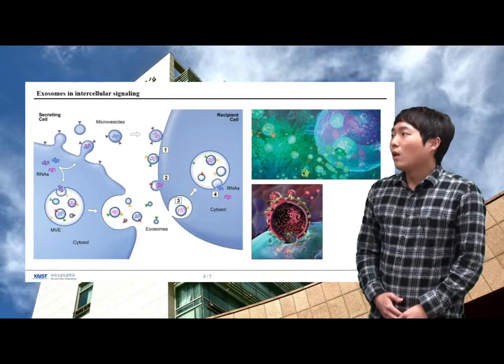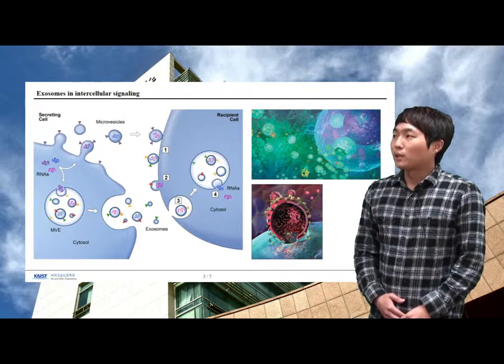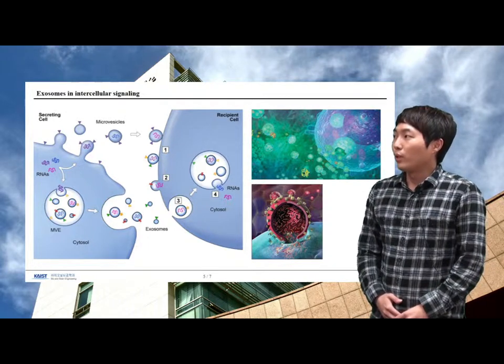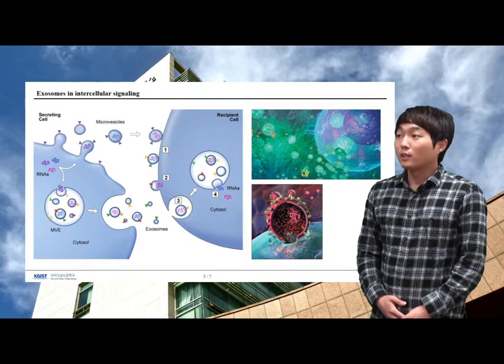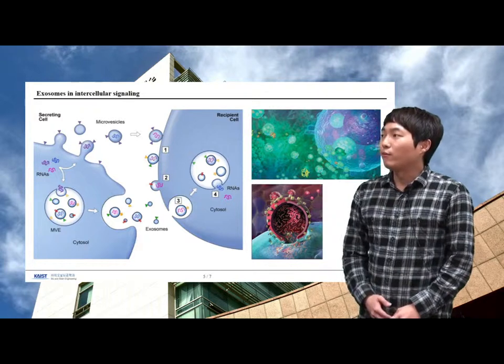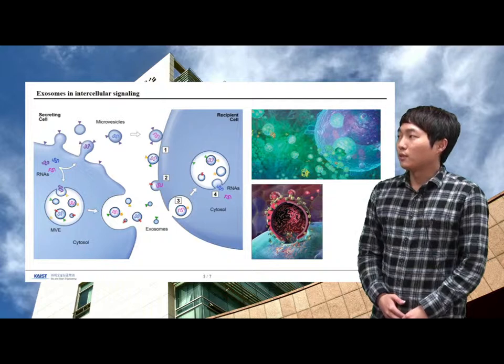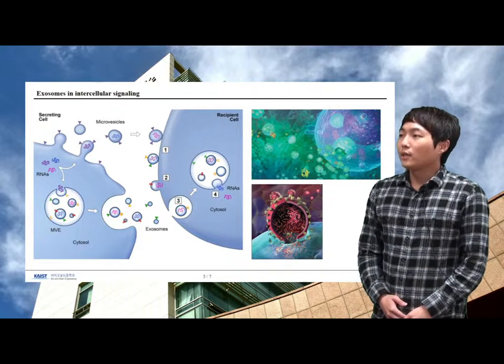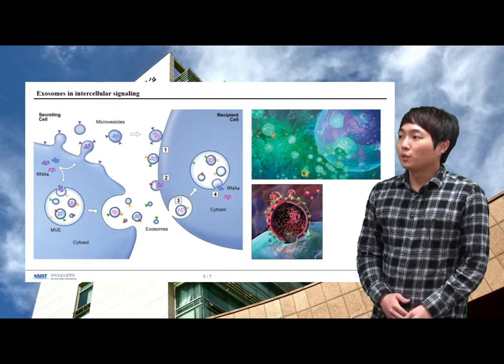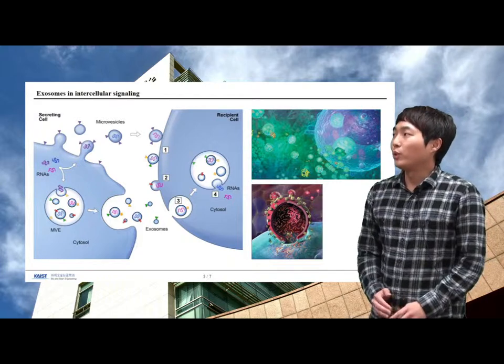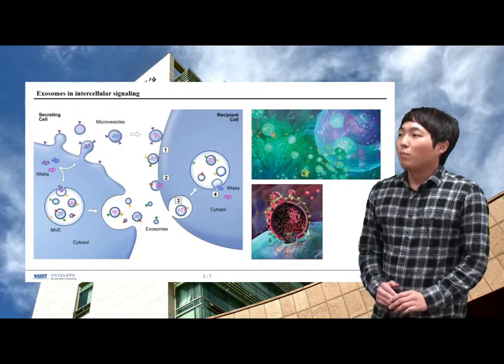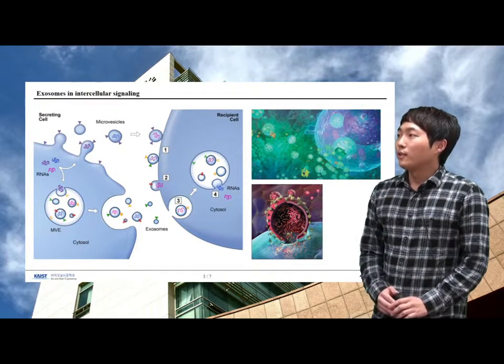Multivesicular bodies and exosomes may dock at the plasma membrane of a target cell with three methods. First, bound vesicles may either fuse directly with the plasma membrane; second, with endocytosis; at last, endocytosed vesicles may then fuse with the delimiting membrane of an endocytic compartment.